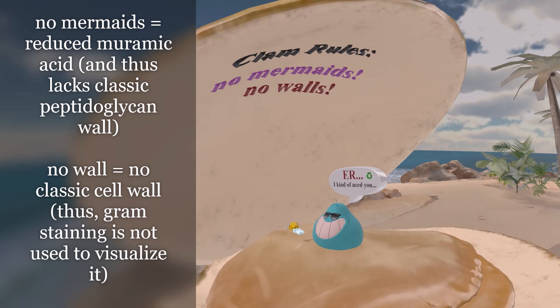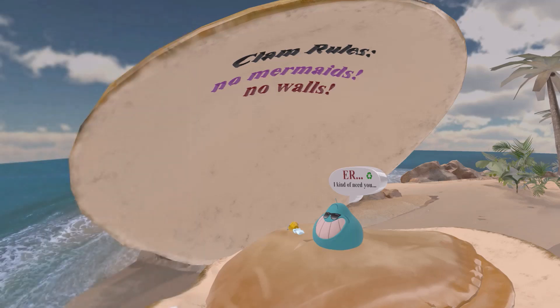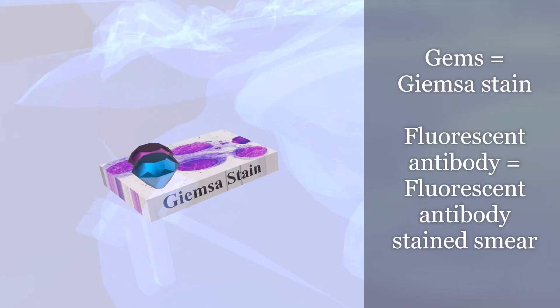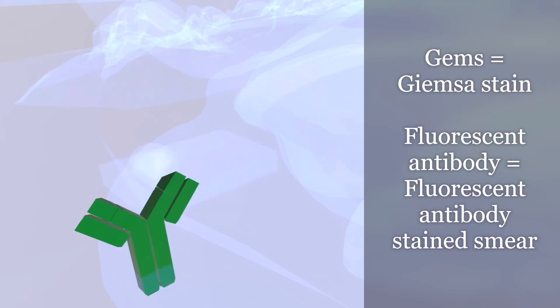Because Chlamydia lacks a classic cell wall, Gram stain is not used to visualize it. Here we notice the gems, which remind us of the Giemsa stain. Giemsa stain is used to visualize Chlamydia, and as we can see, they appear reddish blue. Next to the gems, we see this fluorescent antibody, which reminds us of the fluorescent antibody stained smear, which may also be used to visualize Chlamydia.